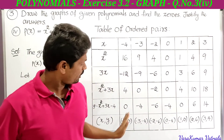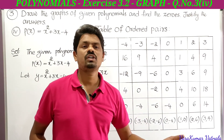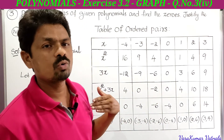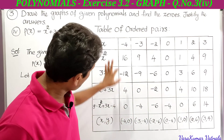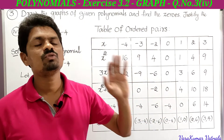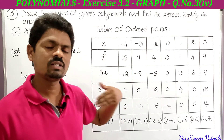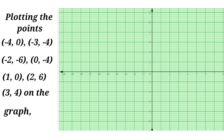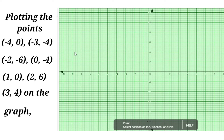Now we have to plot all these ordered pairs on the graph sheet — we get a curve. We observe where the curve intersects the x-axis; from those points of intersection we get the zeros. Finding ordered pairs is very important — if you find them easily, you can draw the graph easily. Before plotting, we select the scale: on the x-axis, 1 cm = 1 unit; on the y-axis, 1 cm = 2 units.